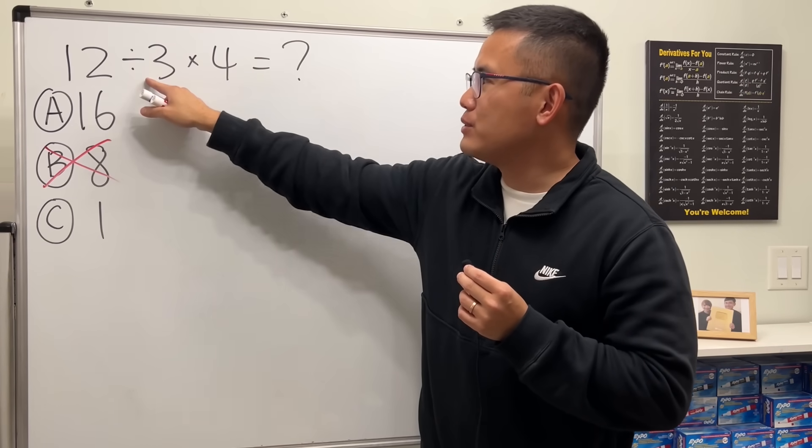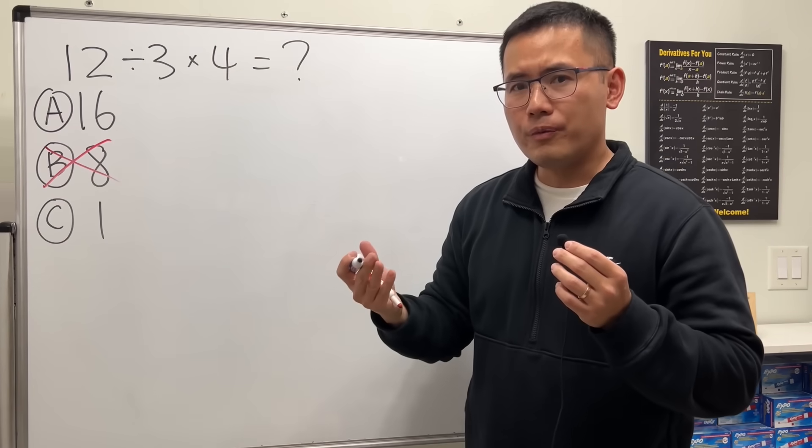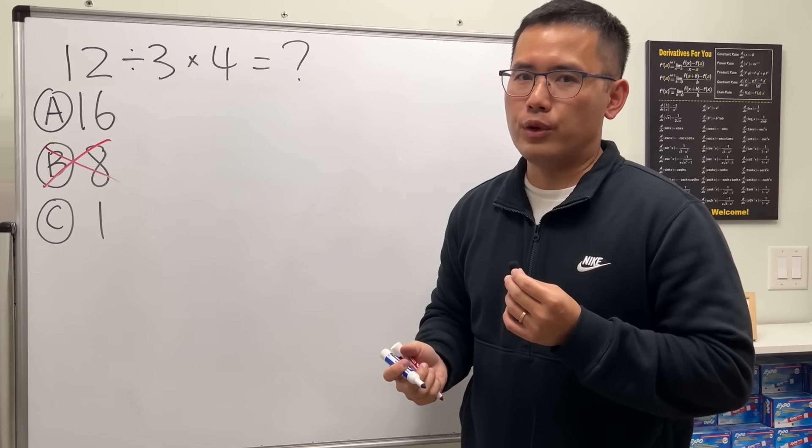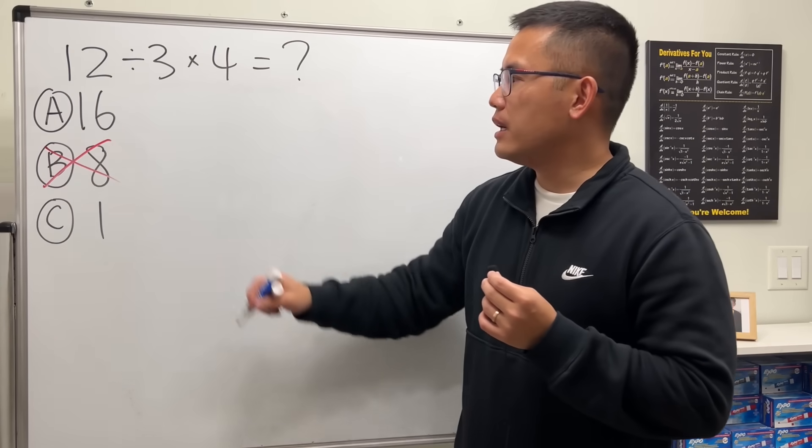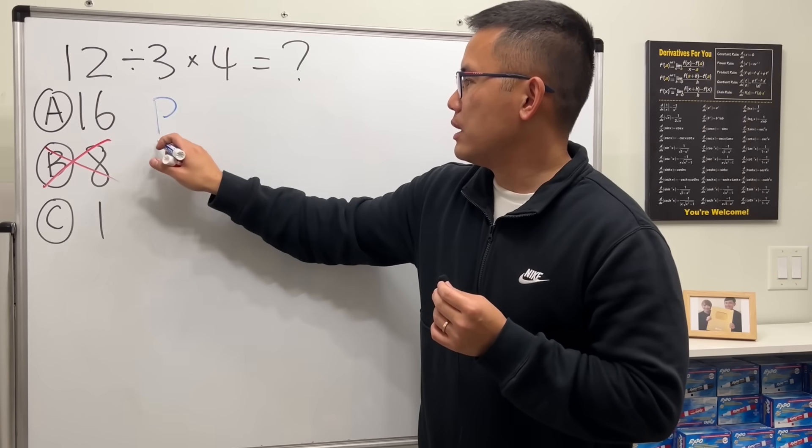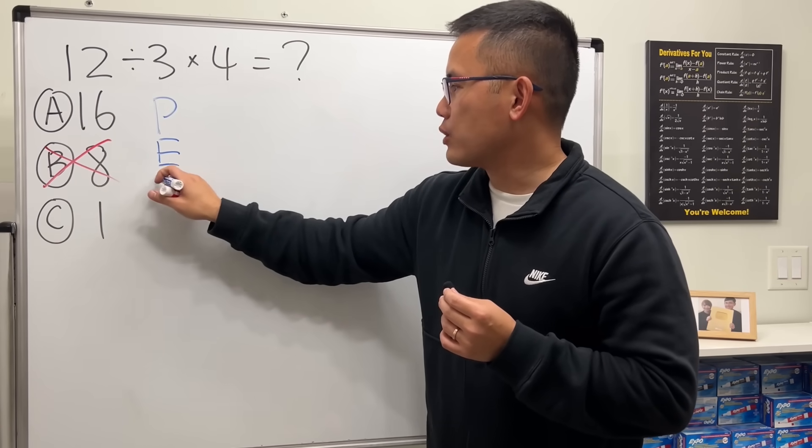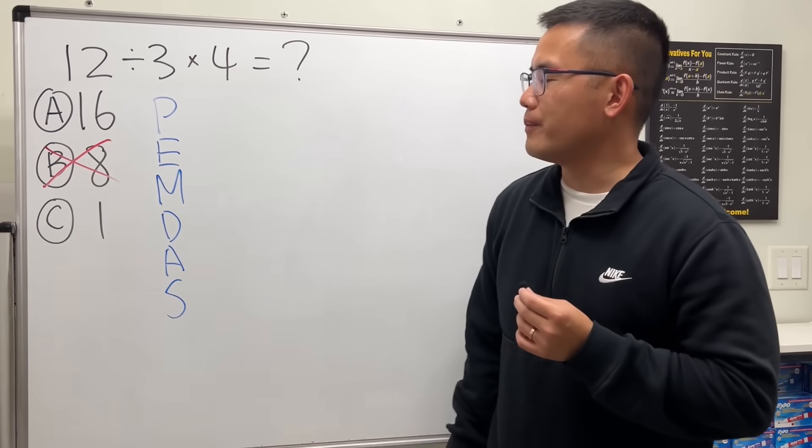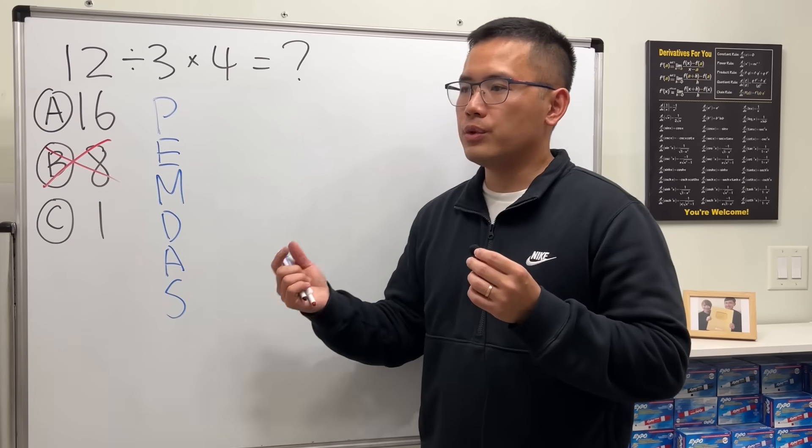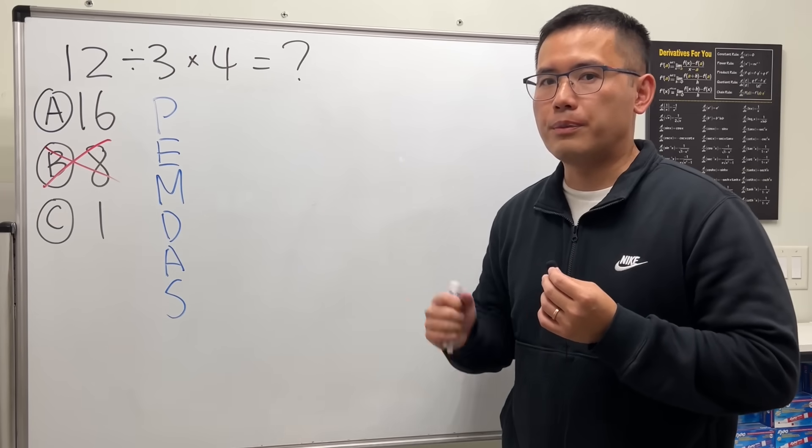We have 12 divided by 3 times 4, so we have to know what operation to do first. We have to follow the order of operations, and here we can use the so-called PEMDAS to help us out. It's just an acronym to help us remember the order of operations.